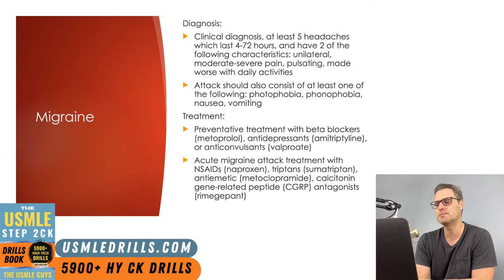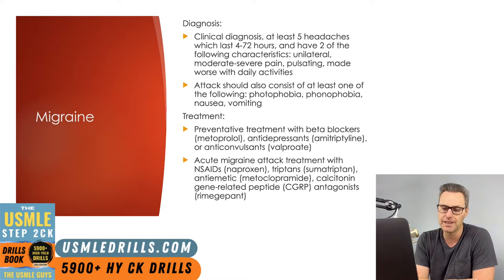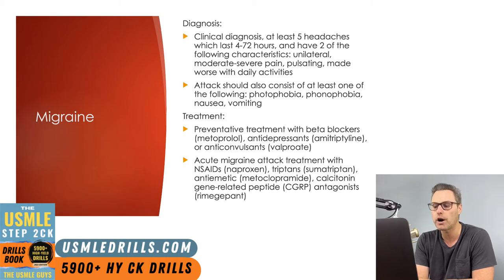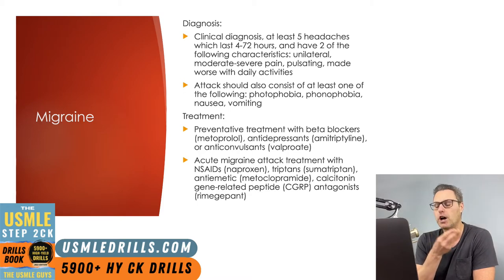The diagnosis of migraine is made after the patient has had at least 5 headaches lasting 4 to 72 hours that have had at least 2 of the characteristics we went over, such as being unilateral, severely painful, pulsating, as well as made worse with daily activities like walking or climbing stairs. The migraine attack should also include at least one symptom of photophobia, phonophobia, or nausea/vomiting.